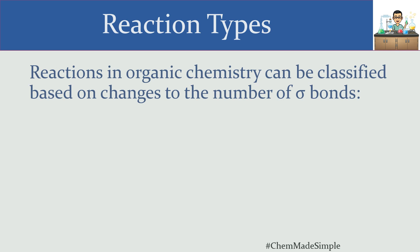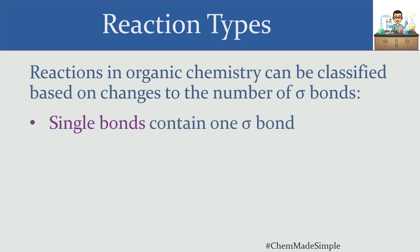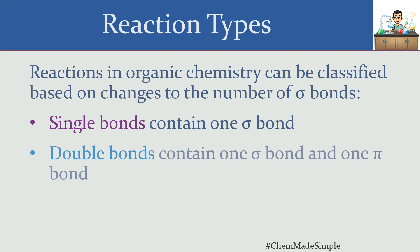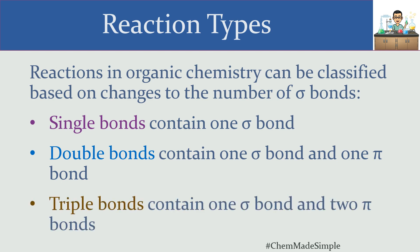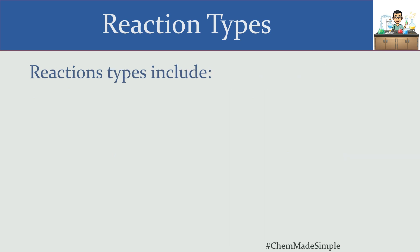Reactions in organic chemistry can be classified based on changes to a particular type of bond — the Sigma bond. As a review: a single bond contains one Sigma bond, a double bond contains one Sigma bond and one pi bond, and a triple bond contains one Sigma bond and two pi bonds. Sigma bonds exist every time you have any bond, so reaction types keep track of how many Sigma bonds we have before and after.